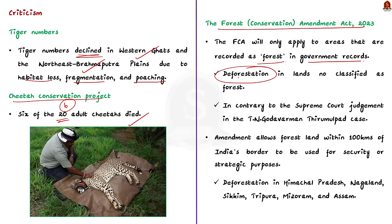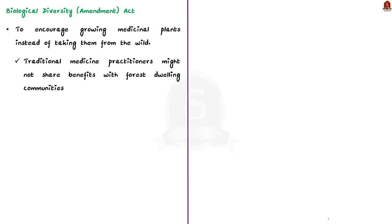Also, the recent amendment to the Forest Conservation Act allows forest land within 100 kilometers of India's border to be used for security or strategic purposes. This will lead to massive deforestation in border areas like Himachal Pradesh, Nagaland, Sikkim, and Tripura, negatively impacting forest-dwelling communities. The last criticism is regarding changes made to the Biological Diversity Act, whose main aim is to encourage growing medicinal plants instead of taking them from the wild. However, there is concern that recent changes will lead to traditional medicine practitioners not sharing benefits with forest-dwelling communities.